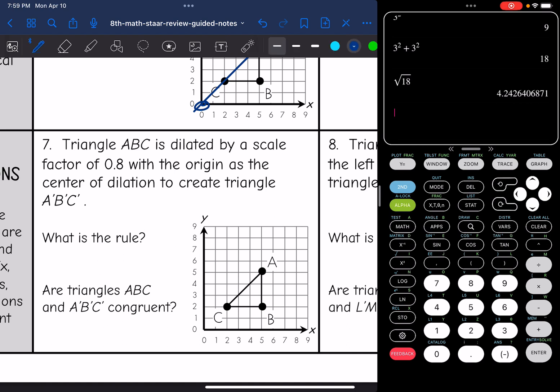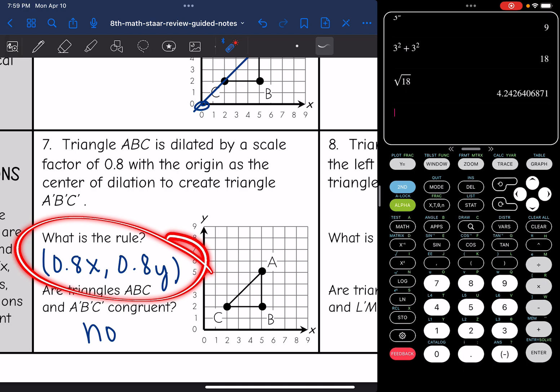So that rule, they gave us the scale factor, would just be 0.8x, 0.8y. And then the last question, are the triangles ABC and A', B', C' congruent? No, because the new figure is going to be multiplied by 0.8, so it's going to be 0.8 times smaller.